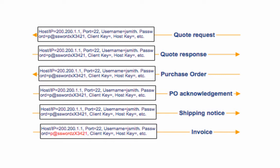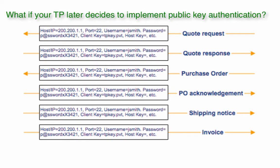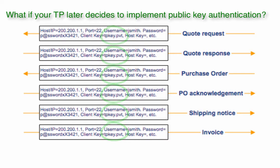Not only can constant entering of credentials be time-consuming, it can also lead to human errors. But that's not all. What if your trading partner later on decides to change one or more credentials? You'll have to go into every single transaction that uses that SFTP connection and change the credentials there. Again, this can be tedious and prone to errors.